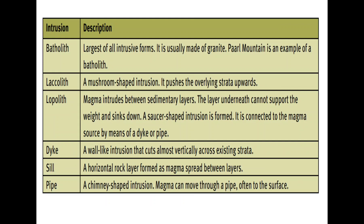A dyke is a wall-like intrusion that cuts almost vertically across existing strata. A sill looks more like a leaf — it is a horizontal rock layer formed as magma spreads between the layers. A pipe is a chimney-shaped intrusion through which magma can move, often to the surface. This is the description of the intrusions or landforms associated with massive igneous rocks.